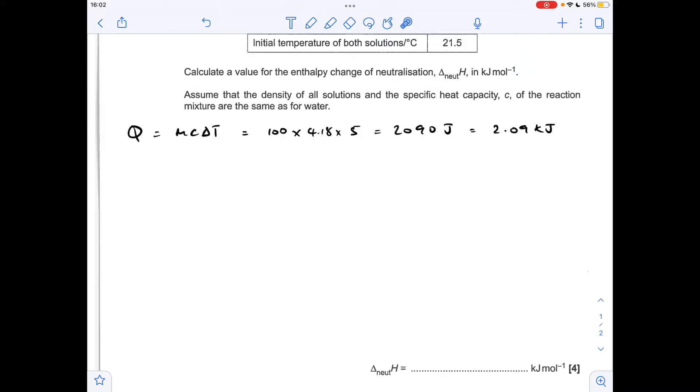The M is the mass of solution, so that's going to be 100 because we used 50 cm cubed of each of the chemicals. Specific heat capacity of the solution is same as that of water, so 4.18. The delta T, the temperature rise, was 5 degrees C. So that's coming out at 2,090 joules.